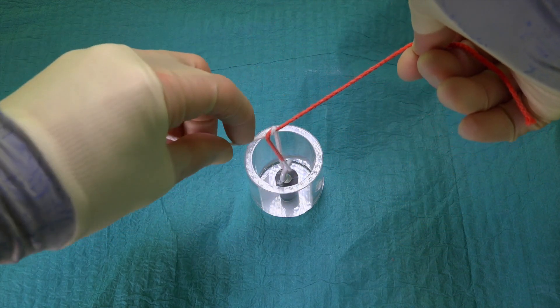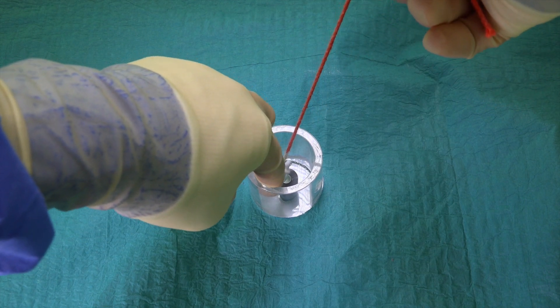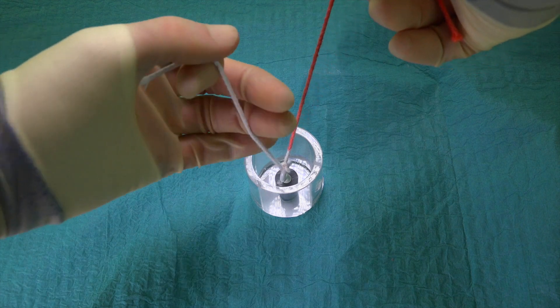As with any reef knot, it's important that we cross our hands with each throw. If we don't, then we will create a slip knot or a granny's knot, which is less secure than our reef knot.